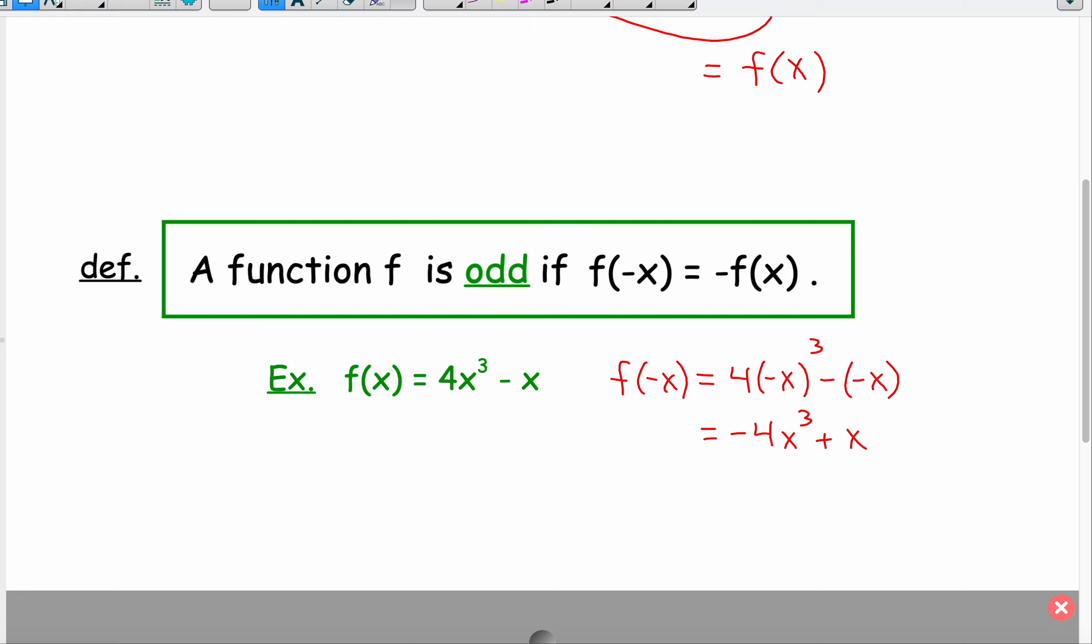But if I take the opposite of the original, or in other words, if I factor a negative out of this, I'm going to get 4x cubed minus x. And that is the opposite of the original function, f of x.